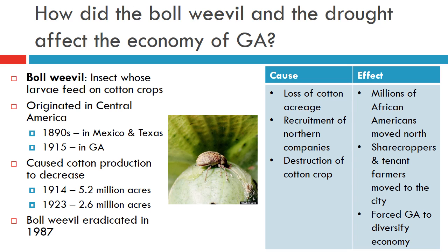The boll weevil is an insect whose larva feeds on the cotton plant. While the pest is thought to have originated in South America, by the 1890s it made its way into Mexico and then on to Texas. By 1915 it had migrated to Georgia and drastically reduced the state's cotton crop.